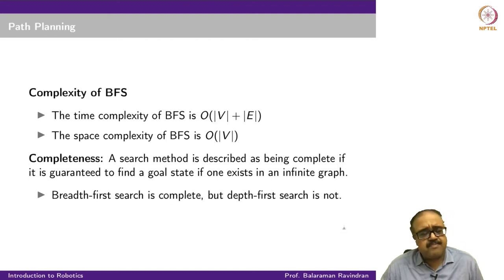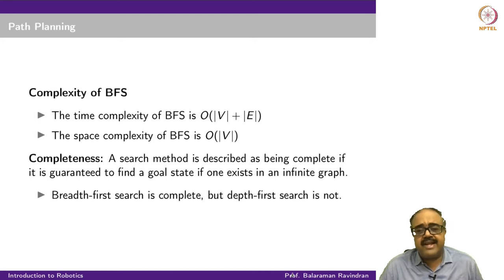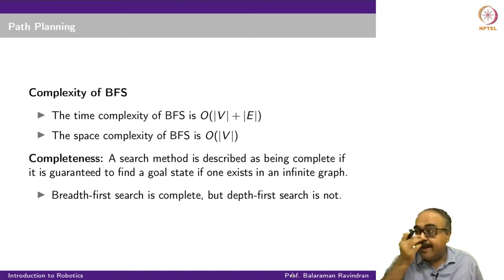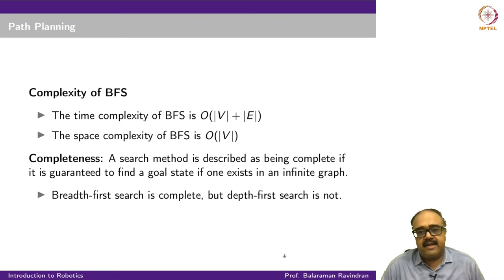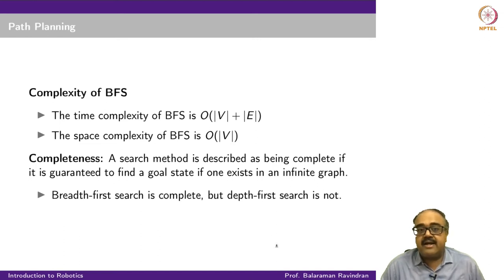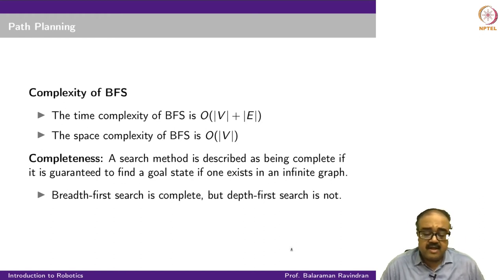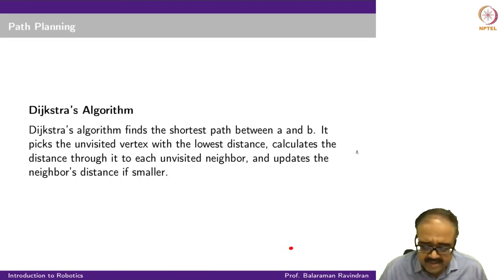The problem with breadth-first search is it expands a lot of nodes. For every node it expands all its children and puts them in the queue before moving to the next level, even if it is very clear that path will not give a short route. This is tricky especially when edges have weights, because all edges are not the same anymore. I would really like to follow edges more likely to give optimal paths and keep less promising edges for later. For weighted graphs where edges have some cost, people look at other algorithms. The most popular is something called Dijkstra's algorithm.